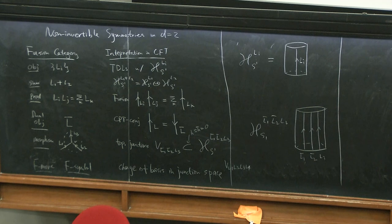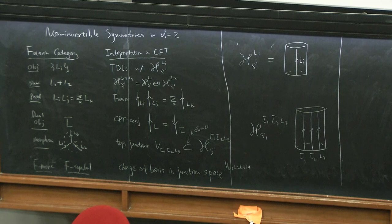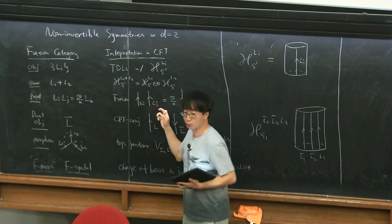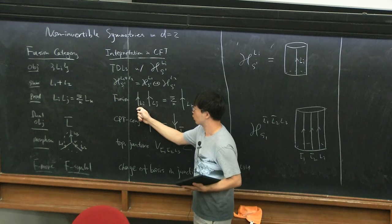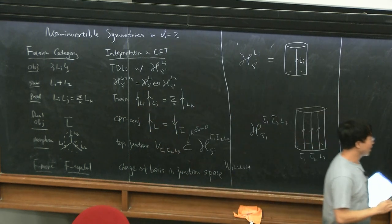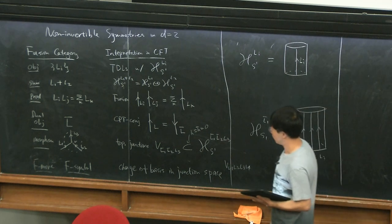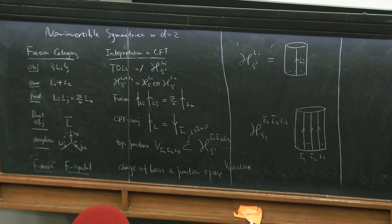Let's use this general dictionary to deduce some simple consequences, particularly relating to specific features of the fusion rule. So far, we have not been assuming any special property of these lines — for example, this line can be decomposable. But it turns out that if these lines are taken to be indecomposable or simple, there's a nice property of the fusion coefficient which can be interpreted from the point of view of topological junctions.